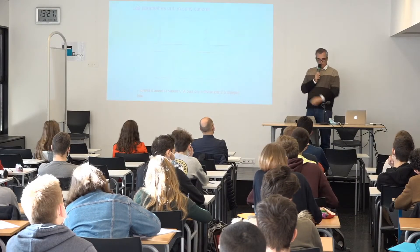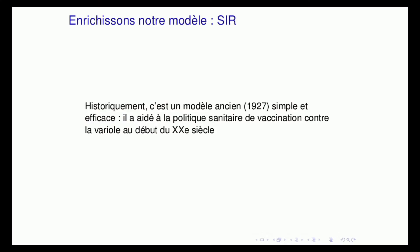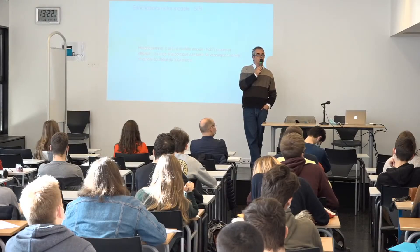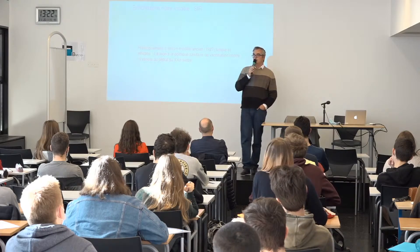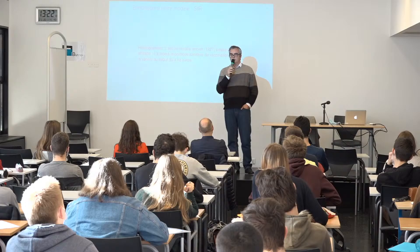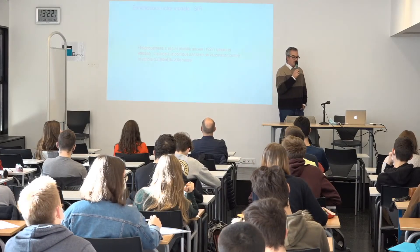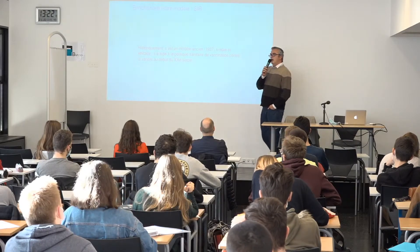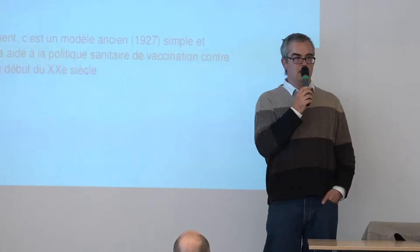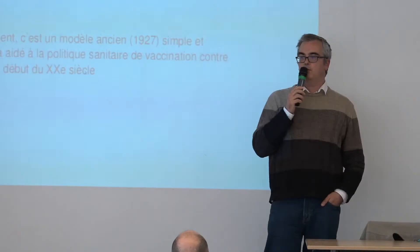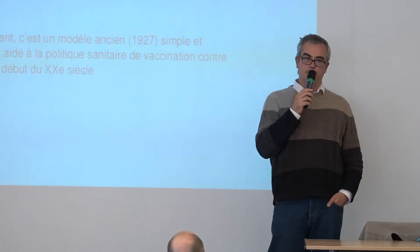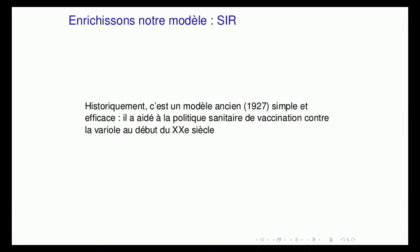Regardons maintenant des modèles un peu plus compliqués qui ont été utilisés pour les maladies. Le modèle le plus connu est un modèle proposé en 1927 par des épidémiologistes américains, et la maladie cible était la variole. Je sais qu'il n'y a aucun d'entre vous qui l'a eue. C'était une maladie extrêmement grave, qui frappait en Europe de manière très régulière et qui a décimé la famille de Louis XIV à la fin de son règne. C'est la première maladie pour laquelle on a eu des modèles à une fin de santé publique, pour placer une politique de vaccination.